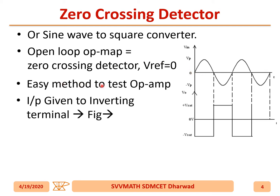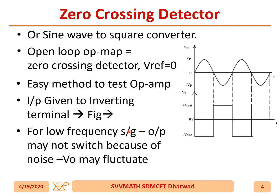An easy method to test an operational amplifier is to give an input to either the inverting or non-inverting terminal. After giving a supply, the output should be a square wave. In this example, the input is given to the inverting terminal and the output is a square wave.